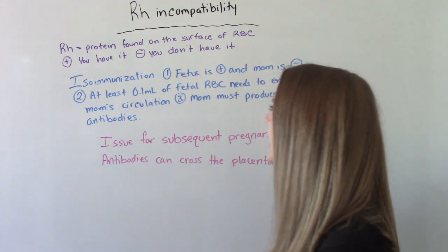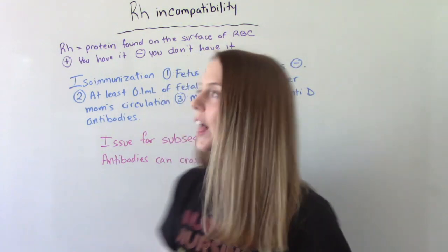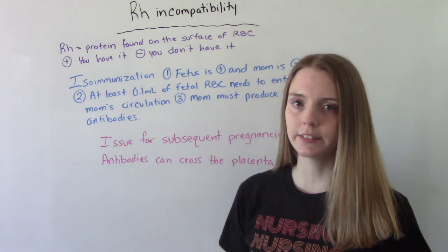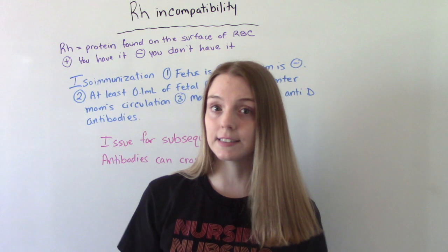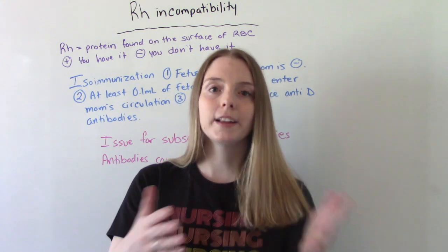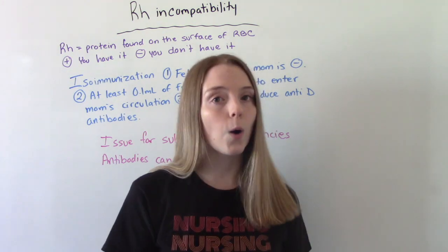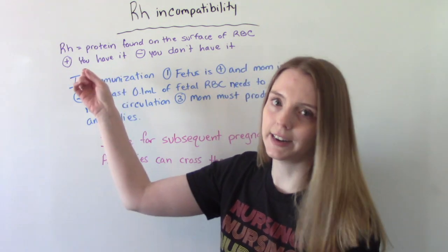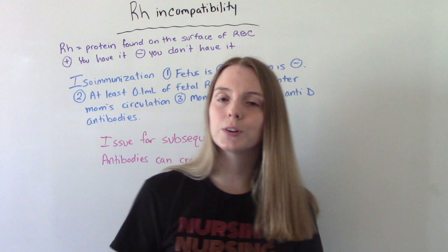The first thing I want to describe is: what is the RH? It's a protein found on the surface of your red blood cells. If you have that protein, you're RH positive, and if you don't have it, you're RH negative. An example of this would be if your blood type is O positive — the positive is the RH. If it's O negative, then you don't have it.